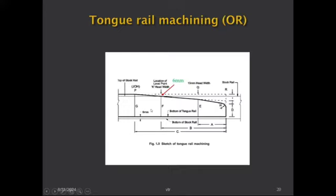In the overriding switch, the tongue rail is machined and planed. Looking at the side elevation, the edge is blunt with 6mm thickness ensured to avoid breakage. A slope is given for a certain distance, and the section gradually increases, assuming full height at the Junction of Head. Up to the Junction of Head there is machining on both the vertical and lateral sides to allow proper housing on the stock rail. Since the tongue rail overrides the stock rail flange, there is a 6mm rise given, and this causes a level difference between the tongue rail and the stock rail at that location.